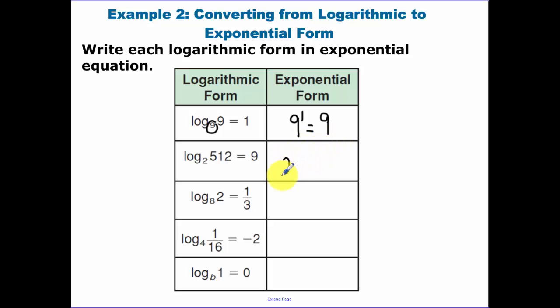Your base of your logarithm is 2, so that's the base of our exponential, of 9 is equal to 512. The base of this logarithm is 8. Your exponent is 1 third equals 2. 8 to the 1 third power is equal to 2, which is true.